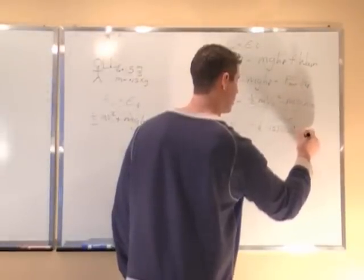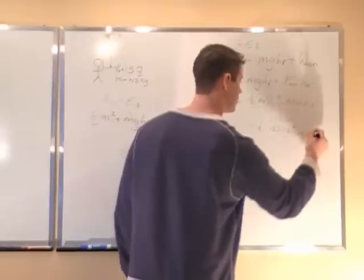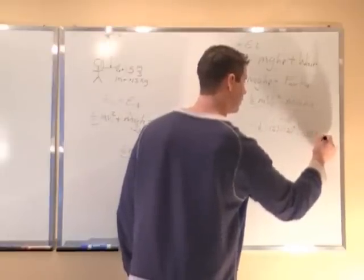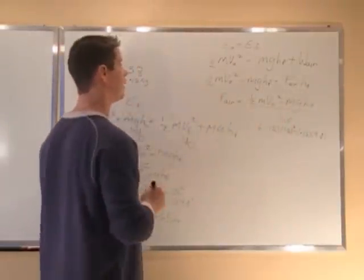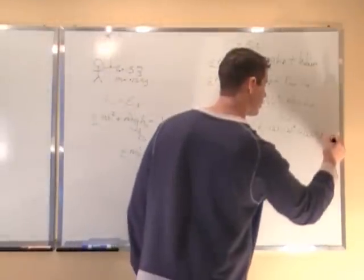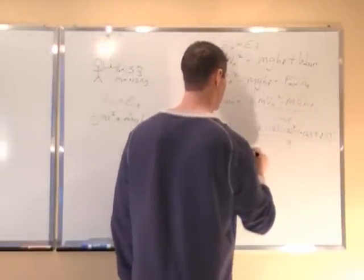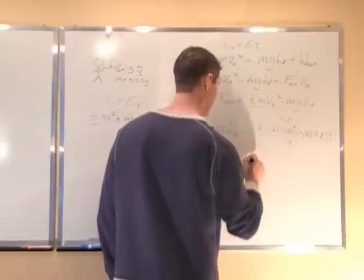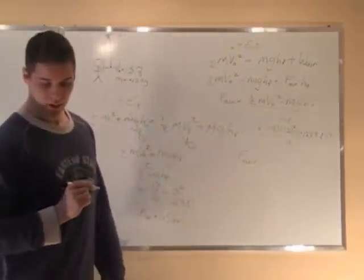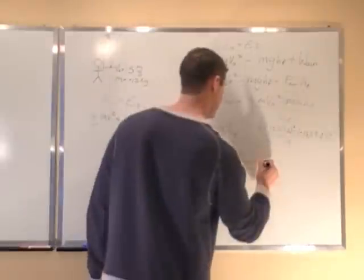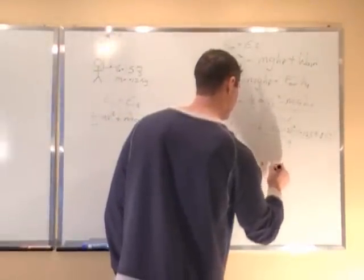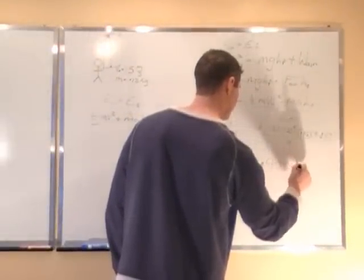minus mass of 0.15 times g of 9.8 times the final height of 9 meters, all divided by 9 meters, so we get an air resistance force of 0.405 newtons.